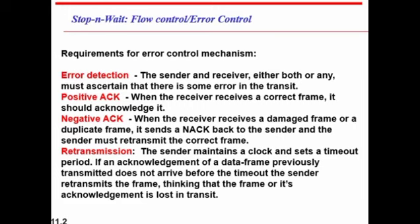The requirements for error control include error detection, positive acknowledgement, negative acknowledgement, and retransmission. Error detection means the sender or receiver must confirm there was no error in transmission. A positive acknowledgement is sent when the receiver correctly receives a frame. A negative acknowledgement is sent when the receiver gets a damaged or duplicate frame, requesting the correct frame to be retransmitted.